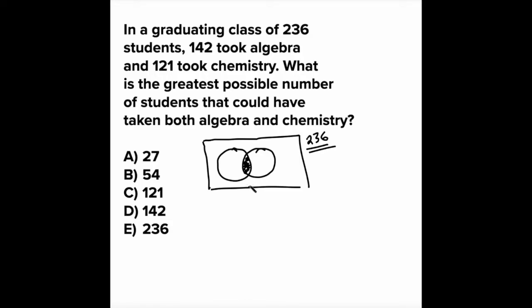So if we want to know the greatest possible number of students who could have taken both, we want to make this overlap as big as possible. Well, how do we do that? We start moving the circles together, right? The closer the circles move, the bigger that overlap becomes until one circle is completely inside the other.